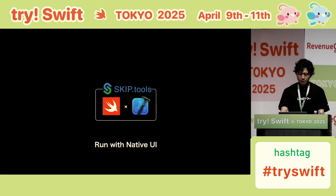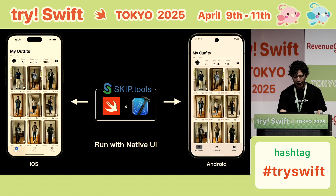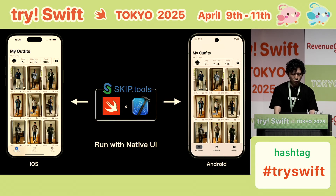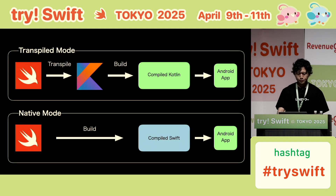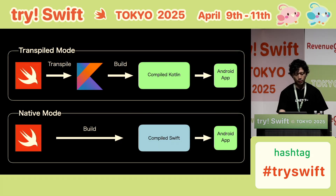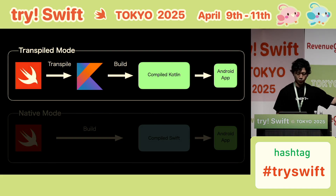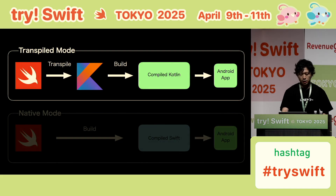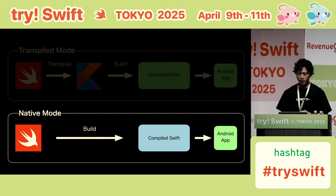Skip is a tool that lets you build iOS and Android apps using Swift and Xcode. It runs on each OS with a native UI. Skip supports two modes: a transpile mode and native mode. In transpile mode, Swift is transpiled to Kotlin. In native mode, Swift is compiled natively for Android.